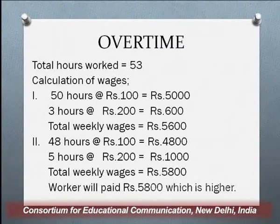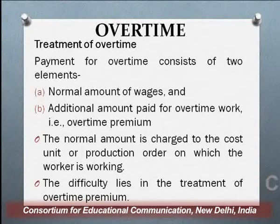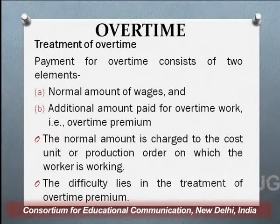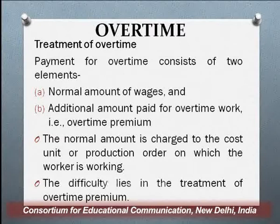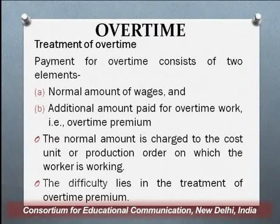When a person works overtime, he or she is being paid an extra amount. The question is how do we treat overtime in cost accounting? Payment of overtime consists of two elements: one is the normal amount of wages, and the other is the additional amount paid for overtime work, called overtime premium. As in the example just discussed, the normal rate is 100 rupees, but for overtime the rate is 200 per hour — this extra 100 rupees per hour is called overtime premium.